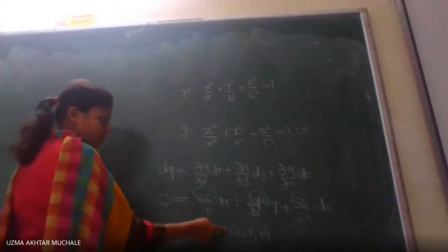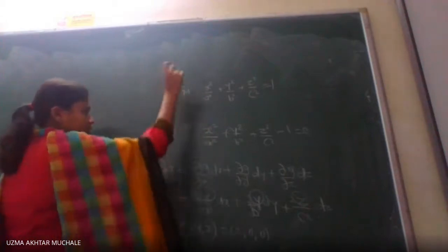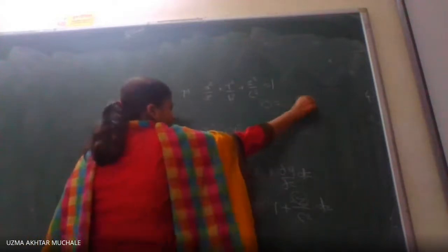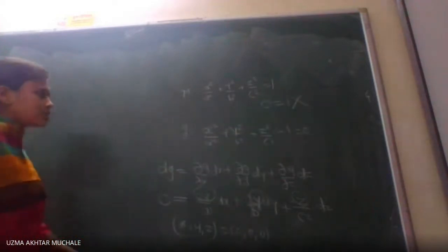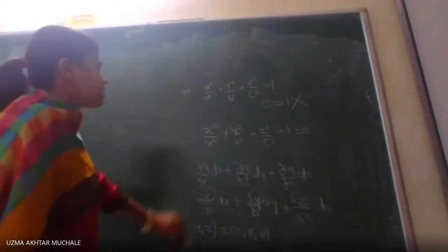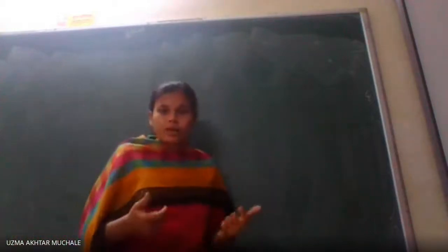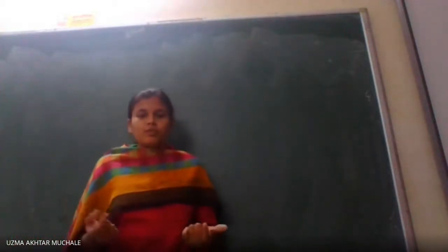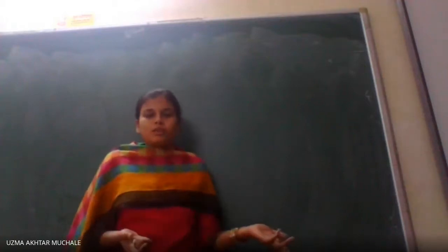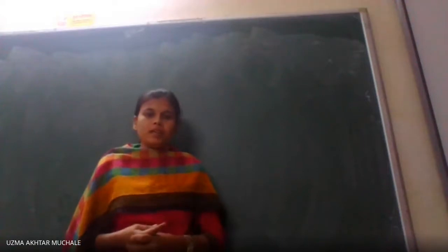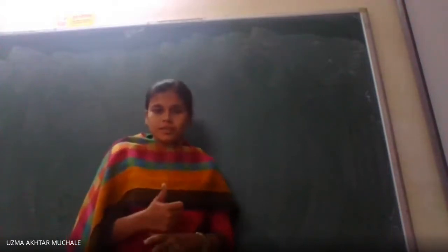So dg = 0 only at the point (0, 0, 0). We now verify whether (0, 0, 0) is on the surface. If I put x = y = z = 0 in the equation, I get 0 = 1, which is not true. Hence we can say that (0, 0, 0) is not on the surface, and hence dg is not equal to zero for every point of the surface. Therefore the given geometric object is a surface.